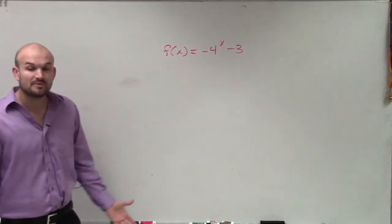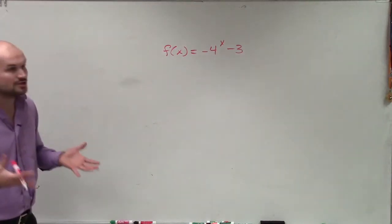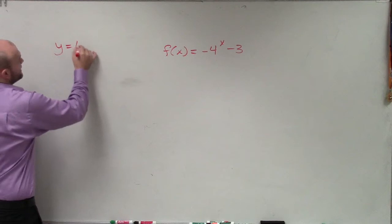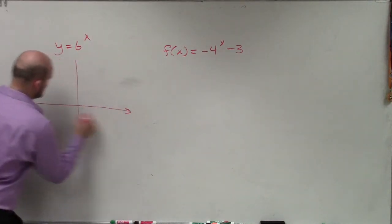All right, so to graph this, there's a couple different ways we can go about doing this. The first thing was that we at least need to know what the parent function looks like. So y equals b to the x. When we talked about that, when we looked over exponential functions,